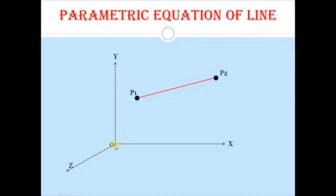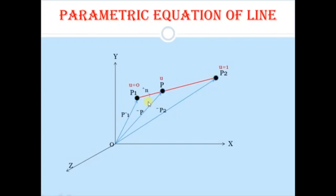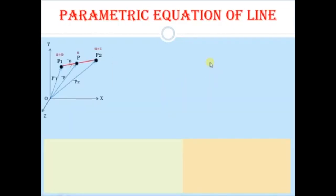The position vectors for these points are P1 bar and P2 bar. If we consider any point P on the line with coordinates (x, y, z), its position vector is P bar. We introduce a parametric variable u such that u equals 0 at point P1, u equals 1 at point P2, and u equals some value u at point P. There is also a unit vector in the direction of the line.